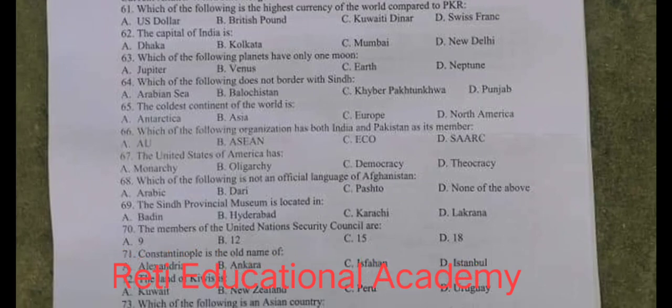Question number 63. Which of the following planets have only one moon? The right option is C. Earth has only one moon.